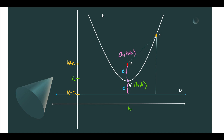So from this setup, we can say that the coordinates of our focus would be H, and then K plus C. To represent a point on the parabola, let us use (X, Y). Notice also that we have a point on the directrix that is right across our point on the parabola. That point would give us coordinates X, and then K minus C. Let's say this point is point H.